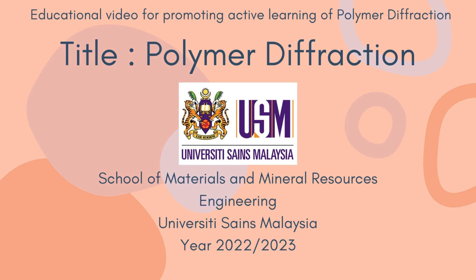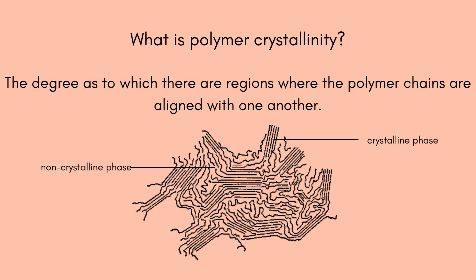This educational video is for promoting active learning of polymer diffraction. What is polymer crystallinity? The crystallinity of a polymer refers to the degree to which there are regions where the polymer chains are aligned with one another.